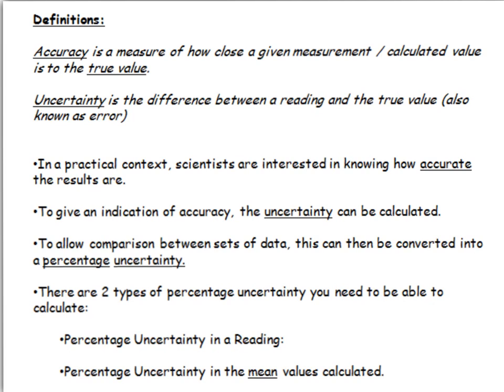Accuracy is a measure of how close a measurement or calculated value is to the true value. So a resistor for instance has a fixed resistance and we can do an experiment to measure what that is. How accurate our measurement is is how close it is to that true value of resistance. Uncertainty is the difference between that reading and the true value. So it gives you an indication of how accurate your measurements are.